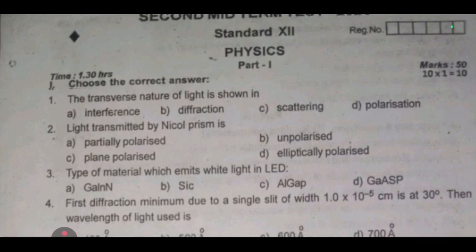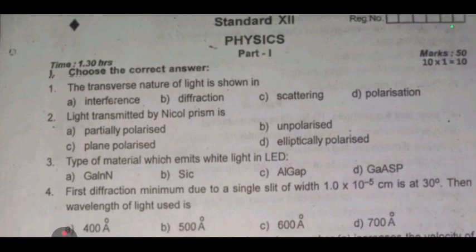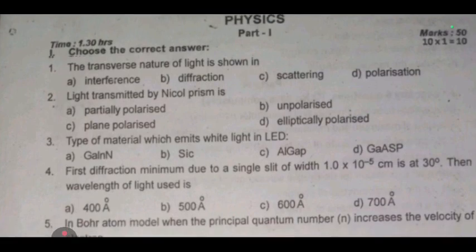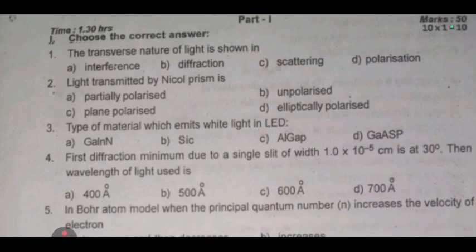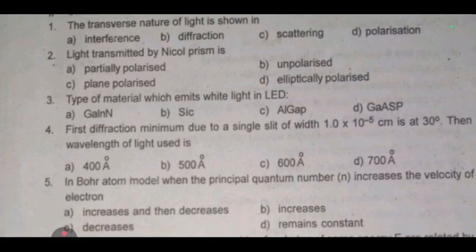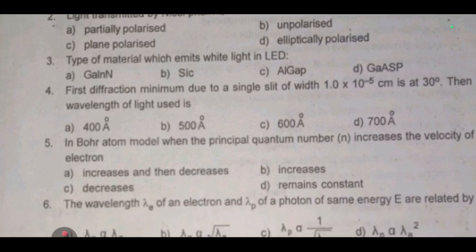So first, choose the transverse nature of light is shown in. Second, light transmitted by nickel prism is. Third, type of material which emits white light in LED. Fourth, first diffraction minimum due to a single slit of width 1.0 times 10 to the power of minus 5 centimeter is at 30 degrees, then wavelength of light used is.